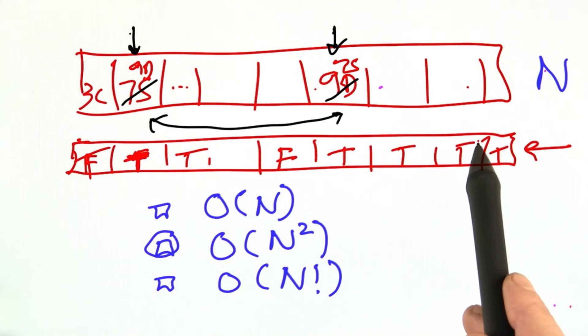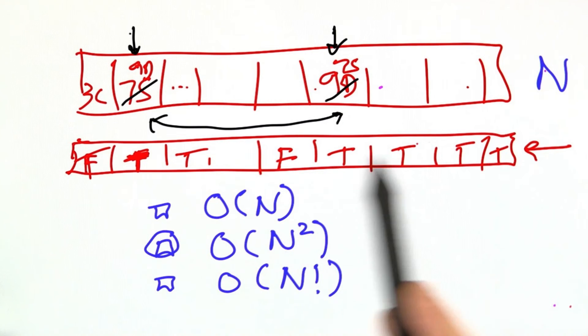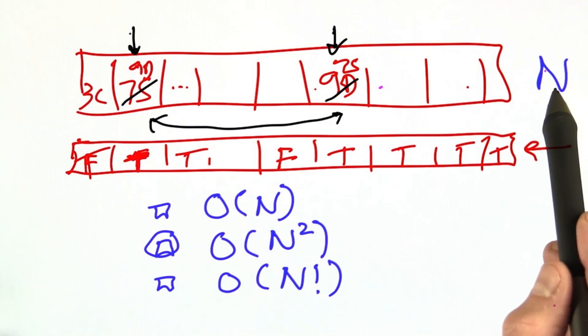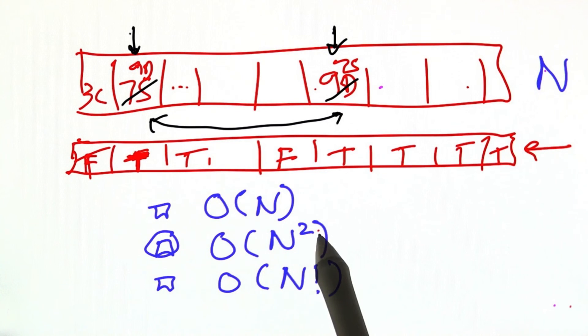But in the average case, the complexity is going to be on the order of n times generating a random number for each of the n elements of the array, or order n squared altogether.